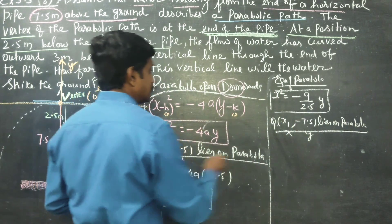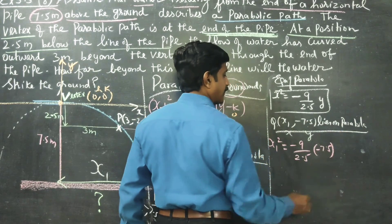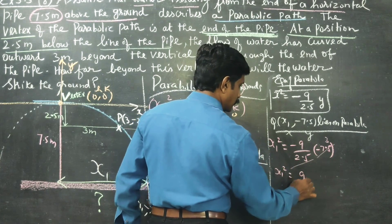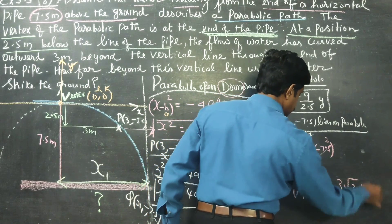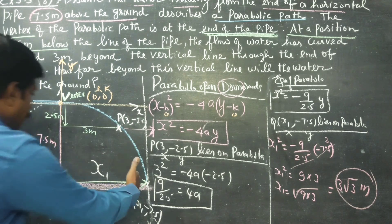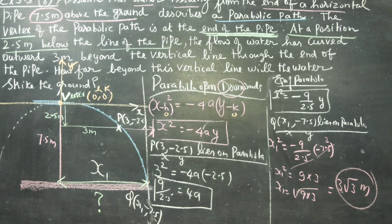Now for the final answer: x₁² = −(9/2.5) × (−7.5). The 2.5 and 7.5 cancel as 3 times, and minus times minus gives plus, so x₁² = 9 × 3 = 27. Therefore x₁ = √27 = 3√3 meters. The water strikes the ground 3√3 meters beyond the vertical line. When √3 = 1.732, the answer is 3√3 meters. Thank you.